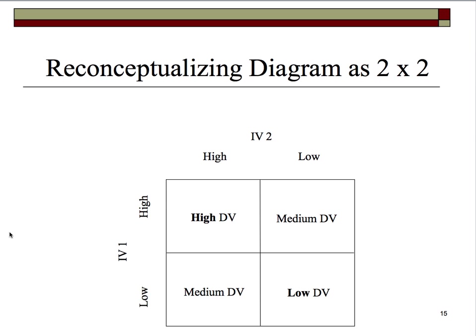In the cells of the table, we have the dependent variable. High levels of IV1 and high levels of IV2 will lead to the highest level of some DV. Low levels of IV1 and low levels of IV2 will lead to some low level of DV. High levels of one and low levels of the other will lead to some medium level of DV. For those of you with an experimental design background, that's really an interaction hypothesis.